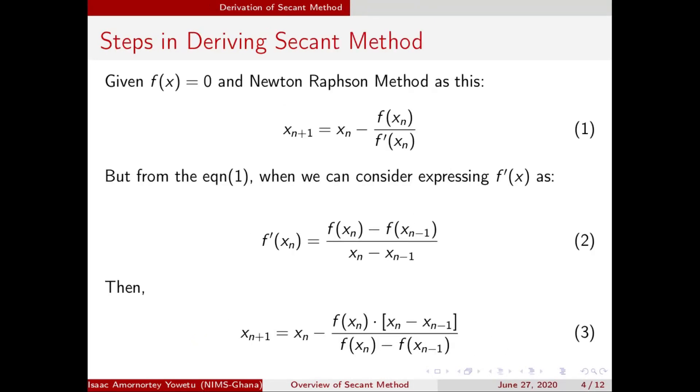So how can we derive this Secant method? Given the function f(x) equals 0, we want to use Newton-Raphson method as seen below. You can watch my video on overview of Newton-Raphson method for how to derive this method. But in this video, we want to follow this method to help us get our Secant method.